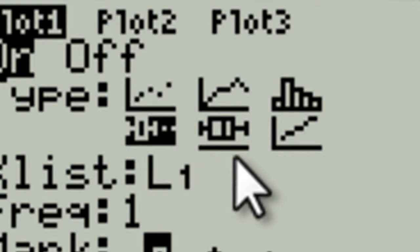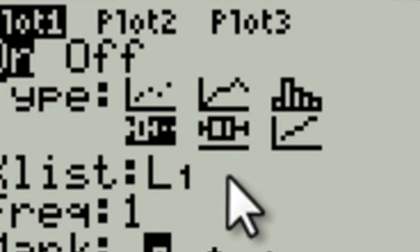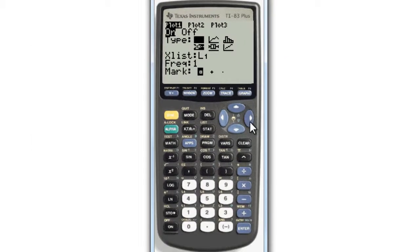but it doesn't have outliers on it, meaning it would include the outliers in the actual diagram. Use the arrows and select this one here, because we want to see any outliers that exist. Here you tell the calculator where you put the data. We put it in list one, so that's okay. This option is the marker you want to use for the outliers. We'll go with that little circle.